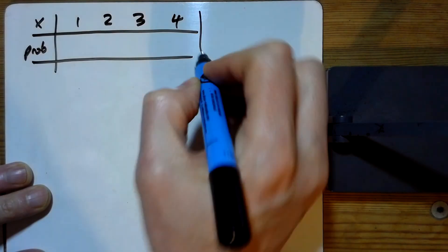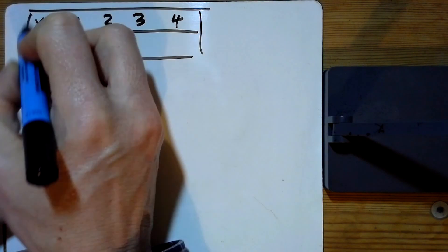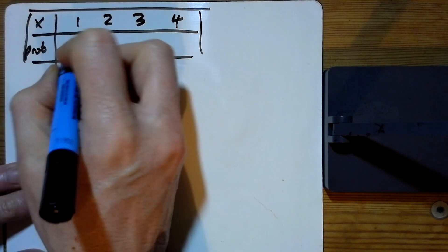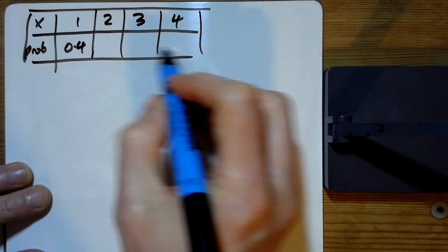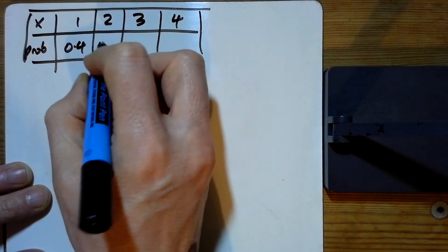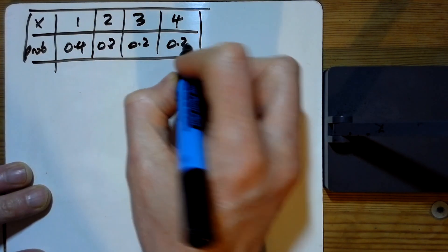We've been told that the probability of it equaling one is 0.4. And it says the rest of them are all equal. So this must be 0.6 between them divided by three. So 0.2 for each of them there.